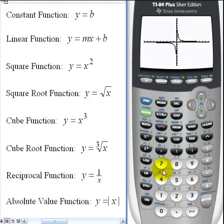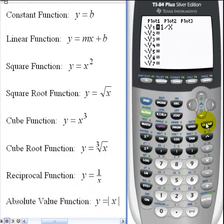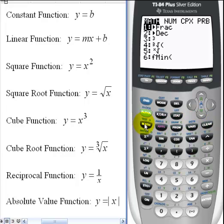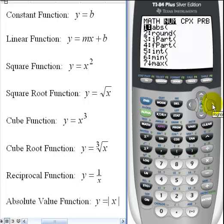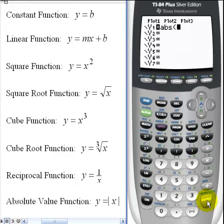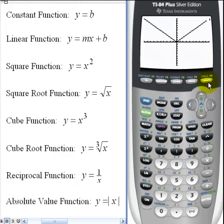But there is the reciprocal function. And then the last function would be the absolute value function. If I go back to the y equals screen, let me clear out that equation. Remember, absolute value is under the math key. Then I have to click the right arrow to go to the num menu. So number one, abs. Here's absolute value of x. And I'll hit graph. There's that standard V shape.